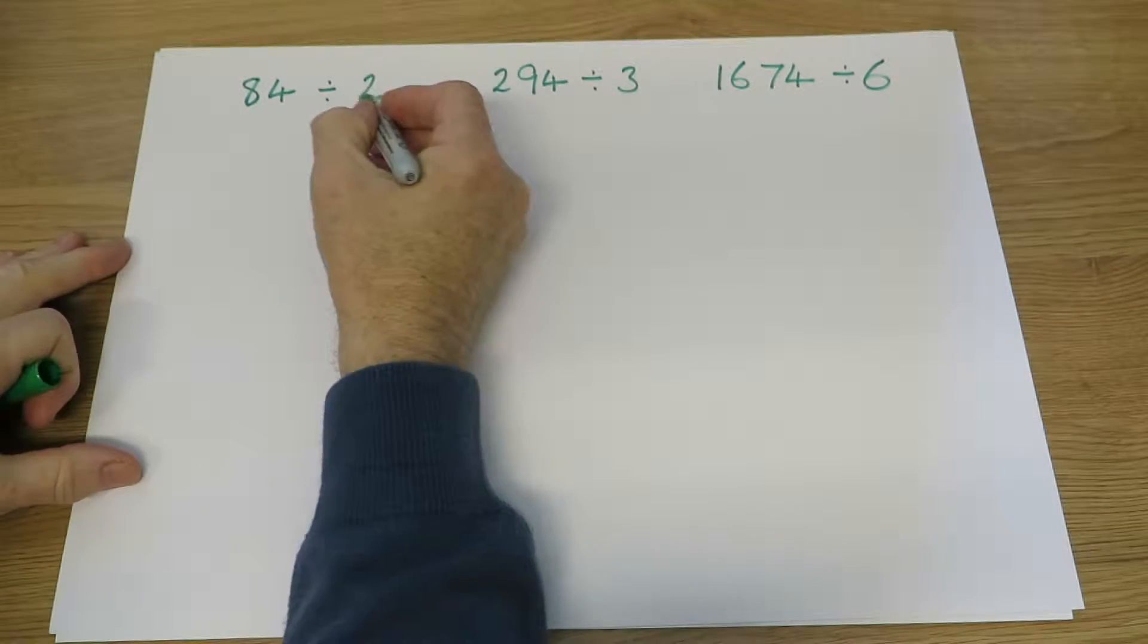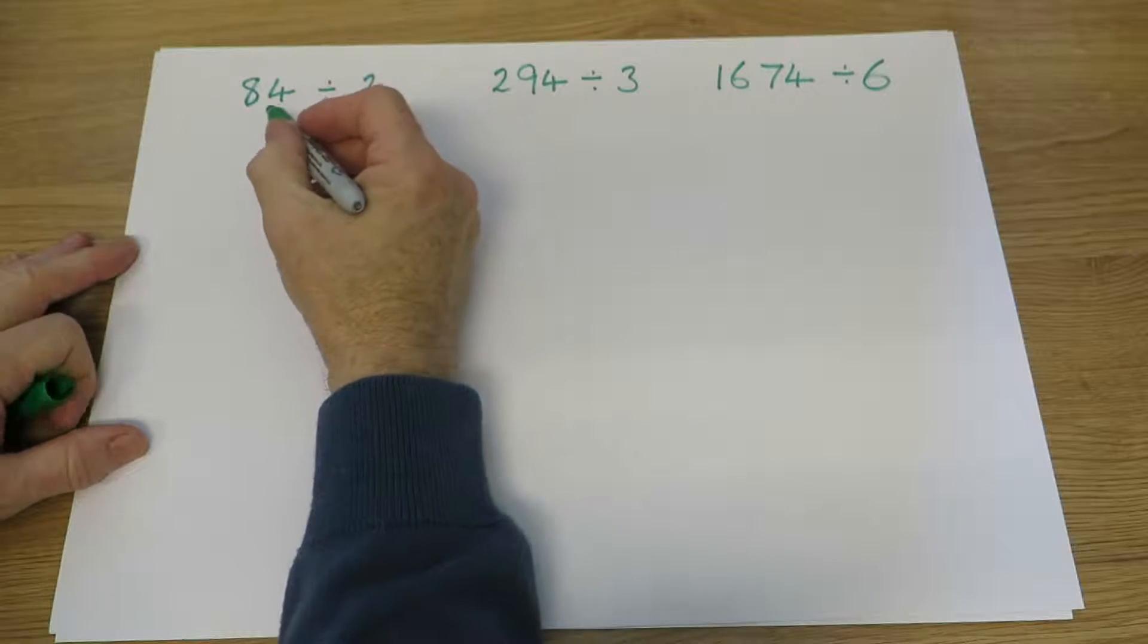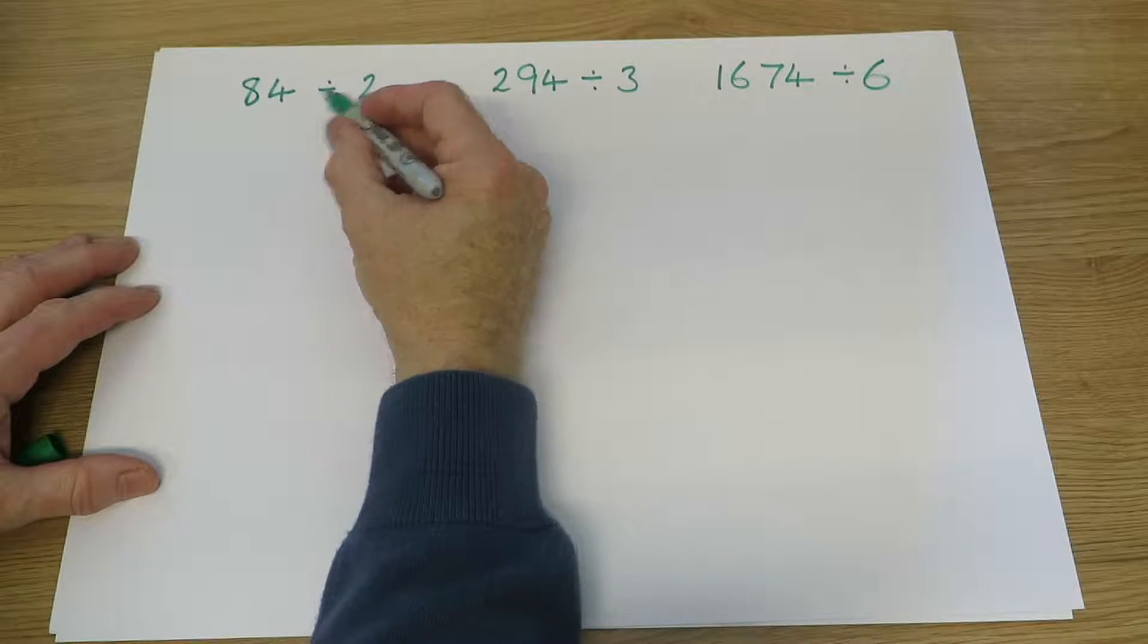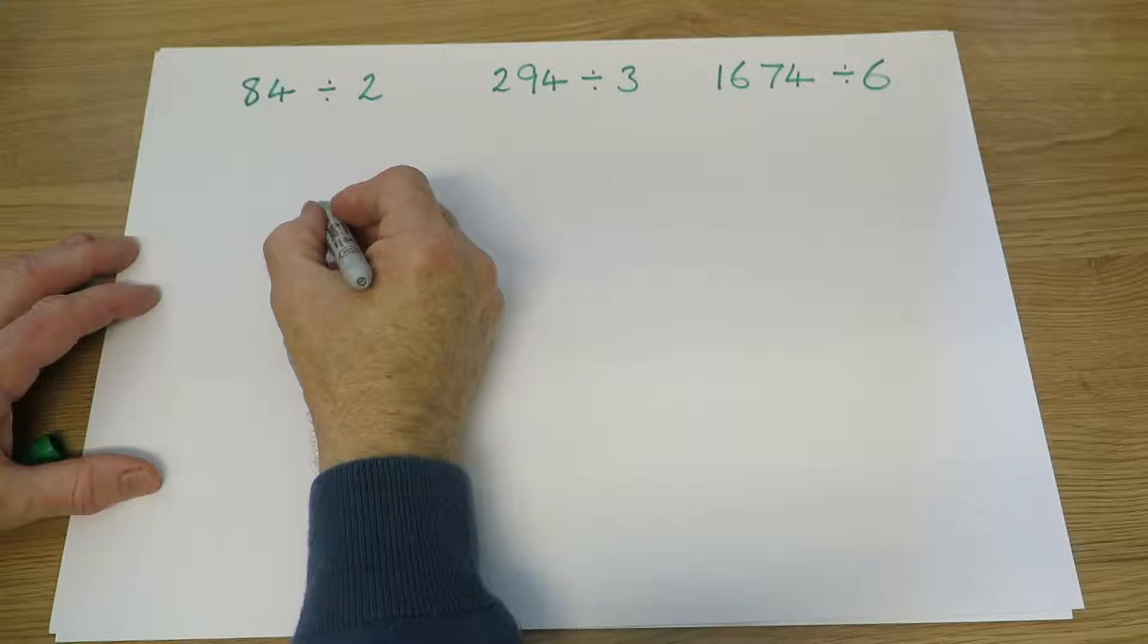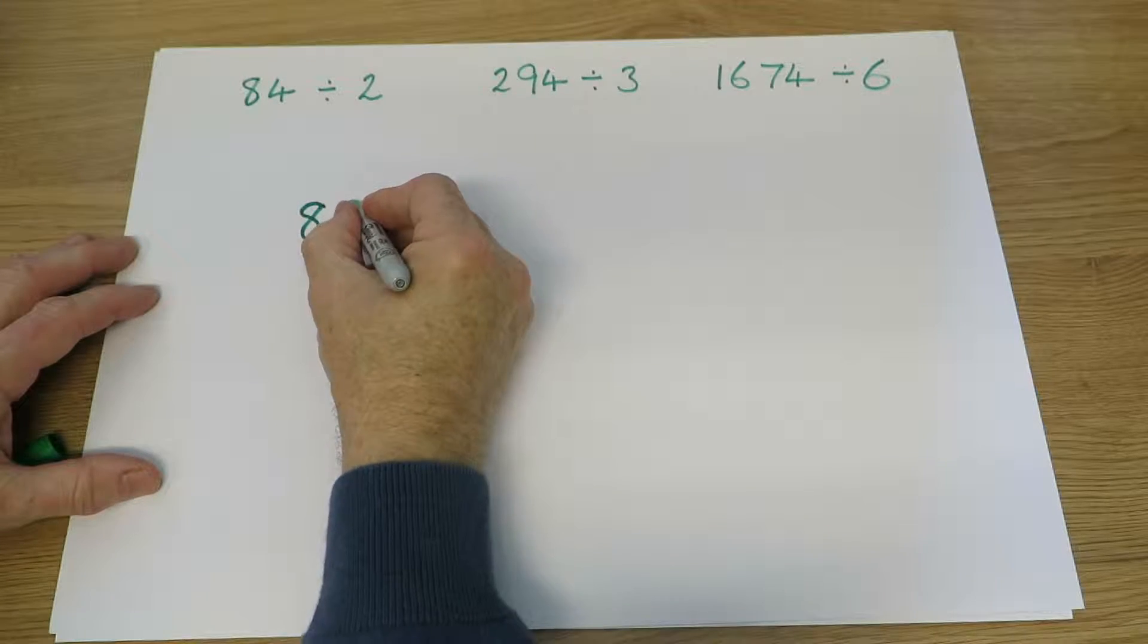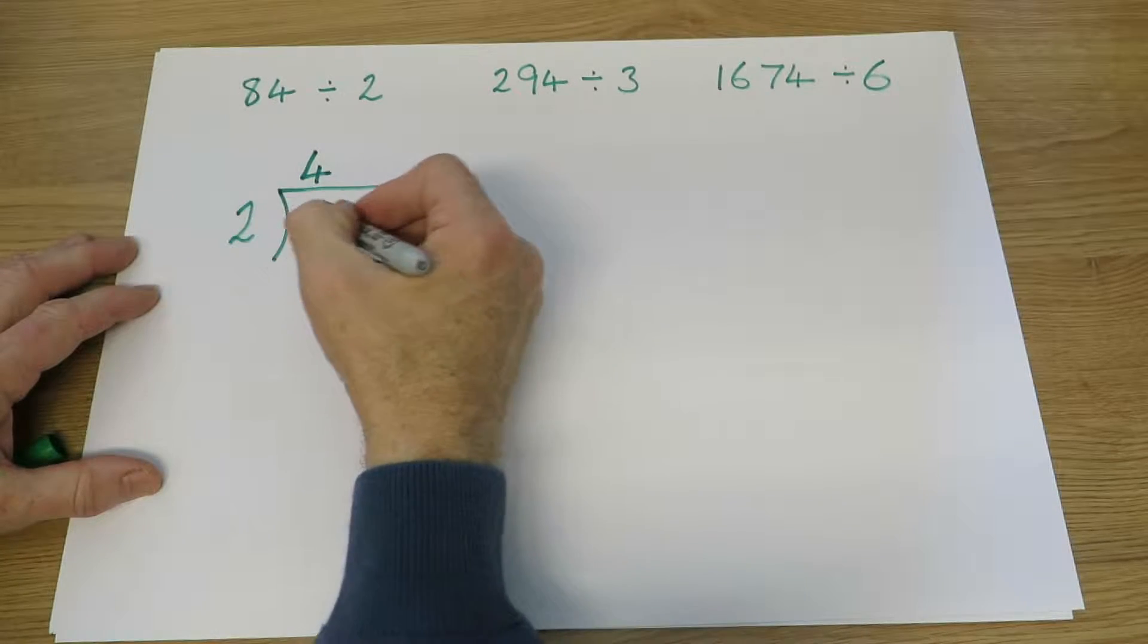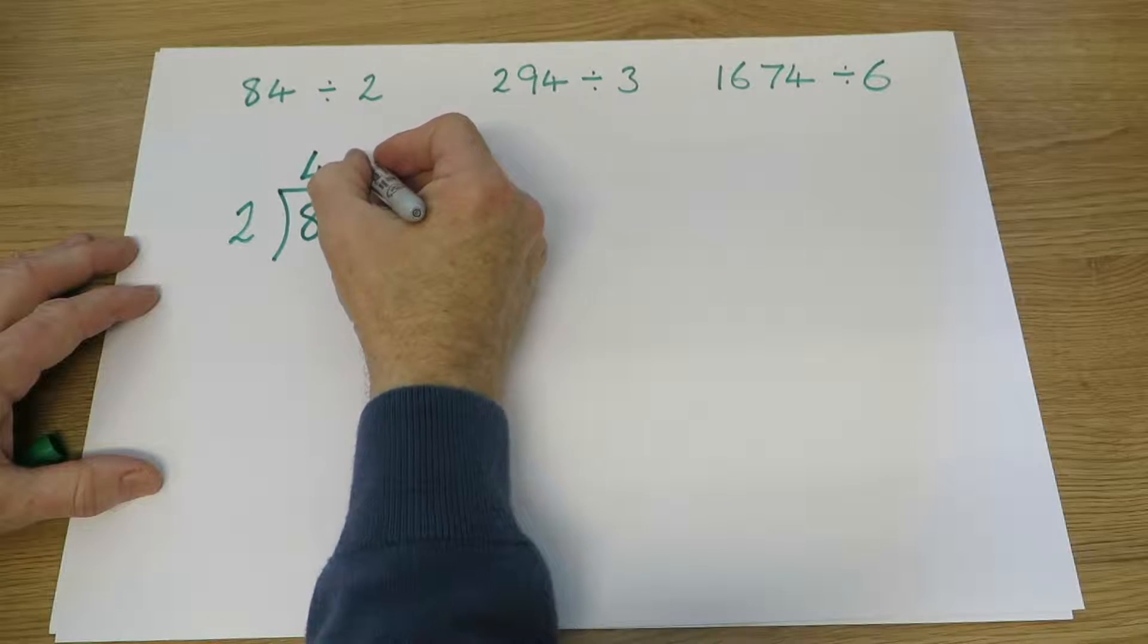So looking at this question, 84 divided by 2, which could mean split 84 between two people, or it could mean how many twos are there in 84. But both questions can be answered using short division. We say how many twos are there in 8? There are 4. How many twos are there in 4? There are 2.